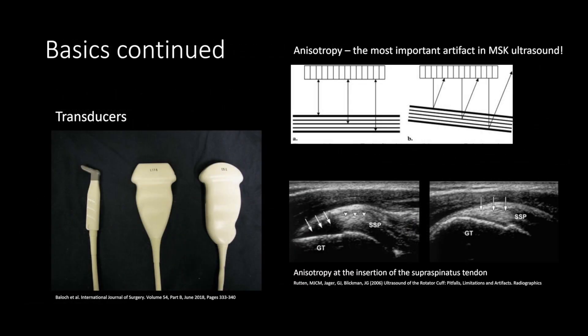These are some of the transducers we use in MSK ultrasound. The left two are the high-frequency linear transducers; the right is a low-frequency curvilinear transducer. The high-frequency linear transducers are better for looking at superficial structures, while the low-frequency one is better for looking at deeper structures. For the shoulder, we'll mostly be using the middle high-frequency linear transducer.